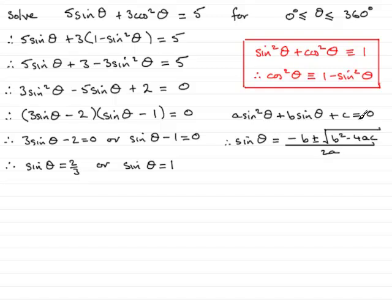In this particular example, a, the coefficient of sine squared theta, would have been 3, b would have been minus 5, and c would have been plus 2. If you put those values into this formula, you should find you come out with these answers for sine theta, 2 thirds and 1, when you use the plus and minus options. That's an alternative way of finding sine theta.